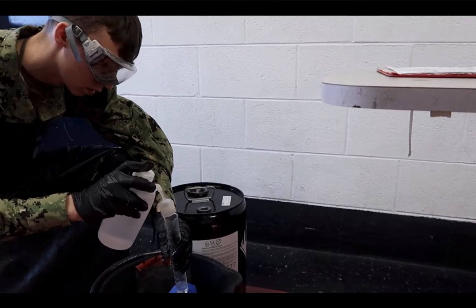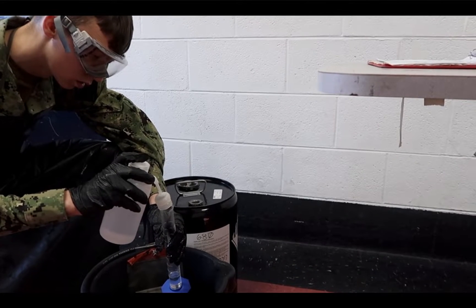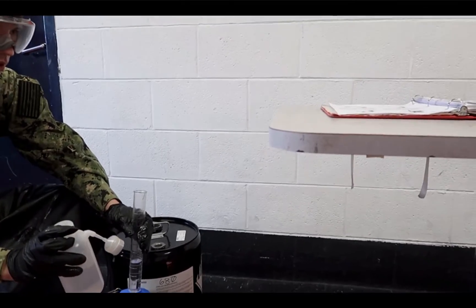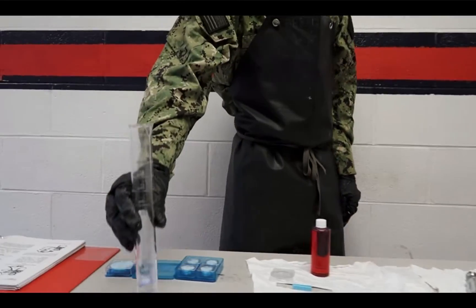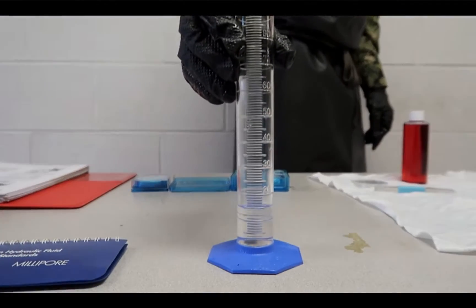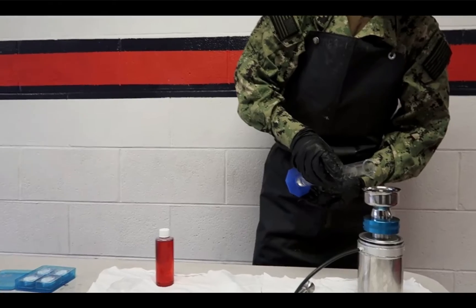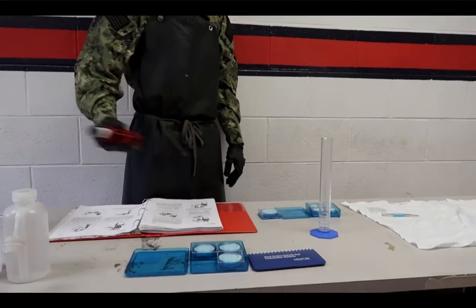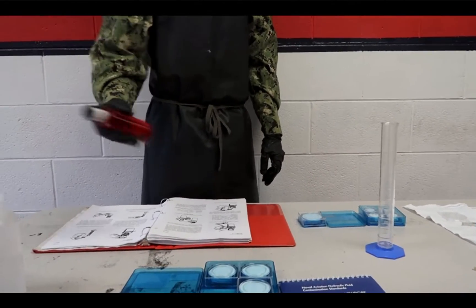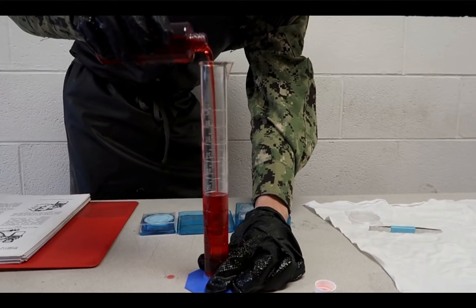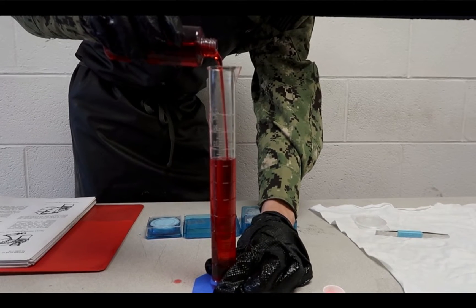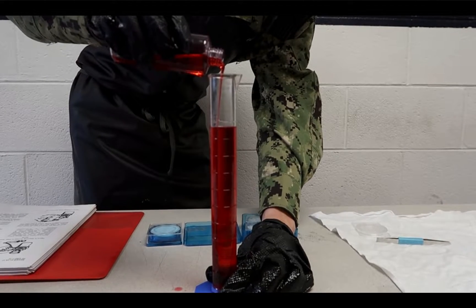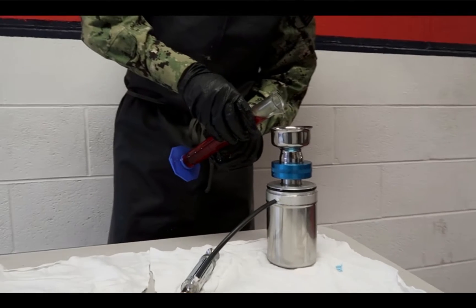Using the filtered solvent dispenser, repeatedly rinse the inside of the graduated cylinder to remove all possible contaminants. Pour out any residual solvent. Measure out approximately 15 milliliters of filtered solvent using the clean graduate, then pour it into the funnel to pre-wet the filter membrane. Shake the bottle of sample fluid to distribute its particulate content, then pour exactly 100 milliliters into the graduated cylinder and discard the remaining sample fluid. Pour all 100 milliliters into the funnel.